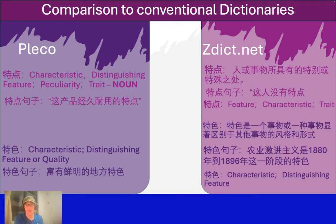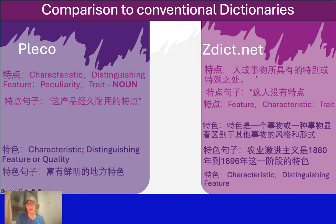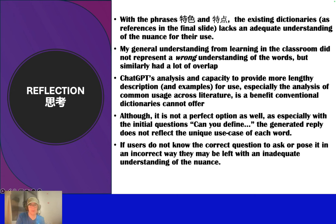第一个工具是Pleco，这是一个设计好的词典应用，它的定义在左边。第二是ZDict.net，这是一个网站，有很多中文定义和英文的翻译，你可以看看在右边。我也包括一个主题相关的词典工具，最后我想给你快快的总结，你可以看看。